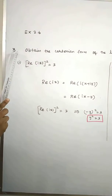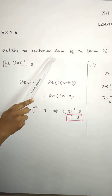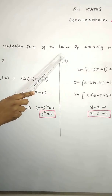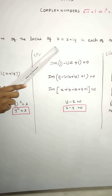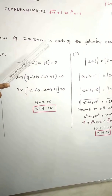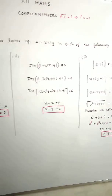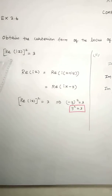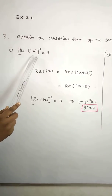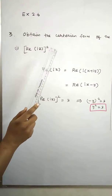Exercise 2.6, third sum: obtain the Cartesian form of the locus of z equal to x plus iy, in each of the following cases. First subdivision: the real part of iz squared is equal to 3.